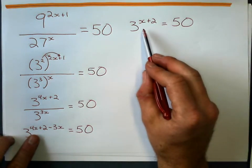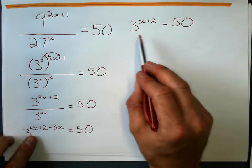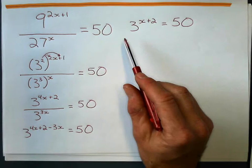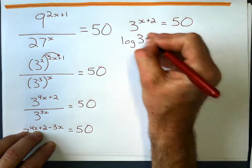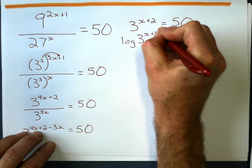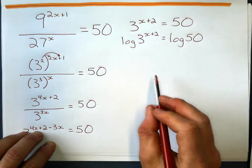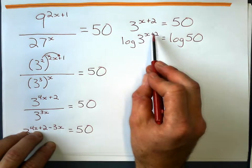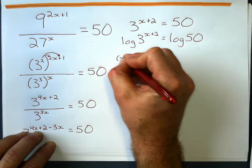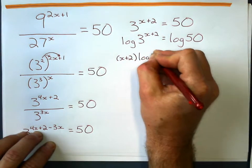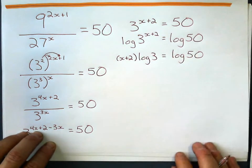Now here I am going to use logarithms because 50 is not a power of 3. I am going to use logarithms here. So to do that, I'm going to take the log of both sides. Log 3 to the power of x plus 2 equals log 50. Now I rewrite this log expression here. Remember, if this is an exponent, it gets multiplied to the log. So it's x plus 2 log 3 equals the log of 50.